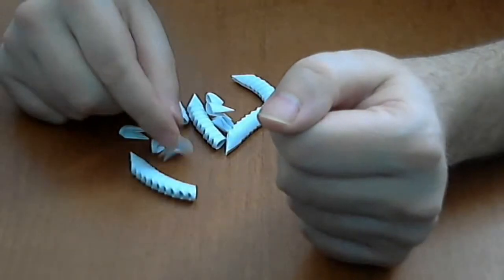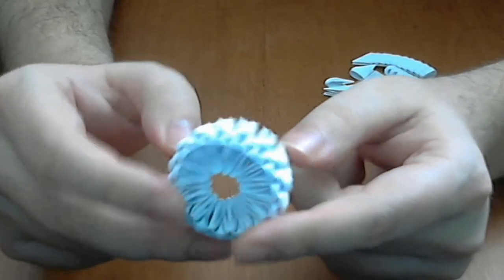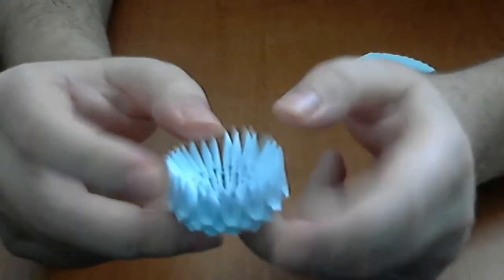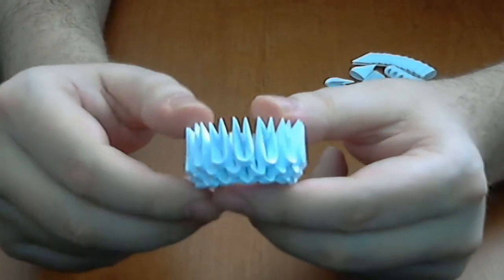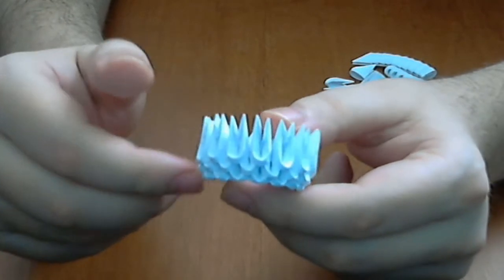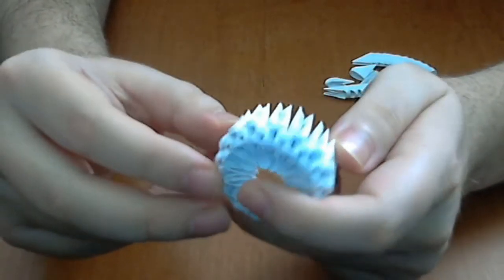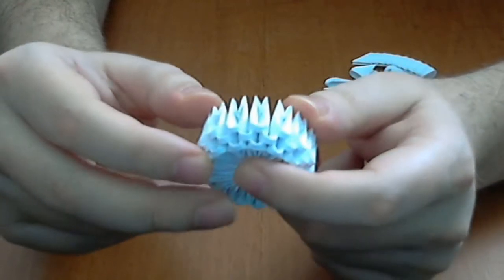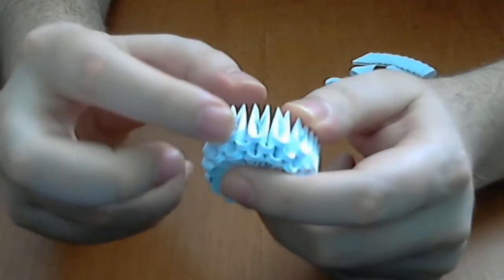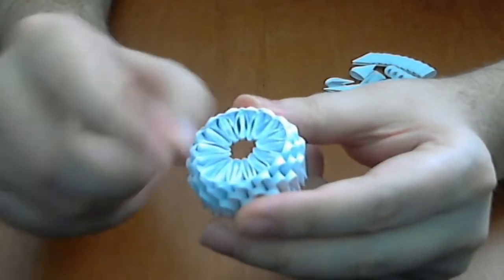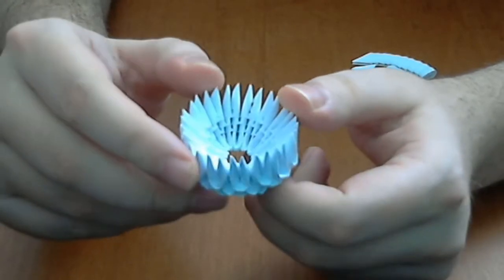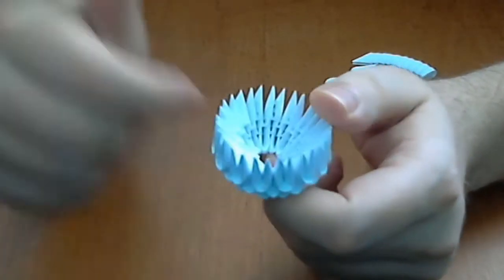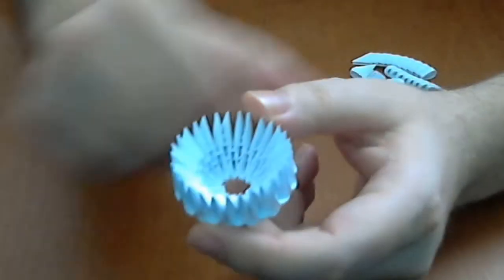First we will make a 3D Origami closed base. This is a 3D Origami closed base. If you do not know how to make this, you will have a link in the right corner of the screen. This 3D Origami closed base has 4 rows: 3 normal here and 1 inverted here. Every row has 15 pieces. In total here we have 60 pieces.